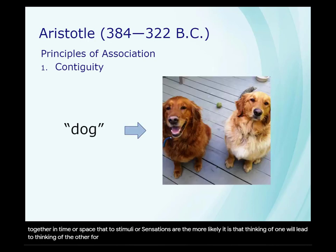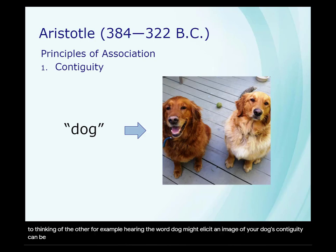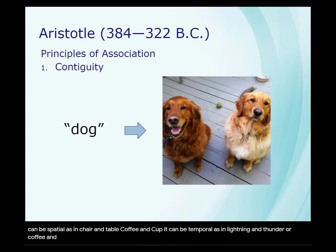For example, hearing the word 'dog' might elicit an image of your dog. Contiguity can be spatial, as in chair and table, or coffee and cup. It can be temporal, as in lightning and thunder, or coffee and oatmeal. Or it could be some combination of those, as in bread and butter.